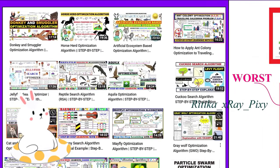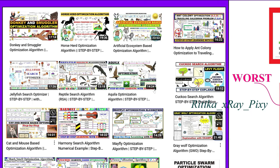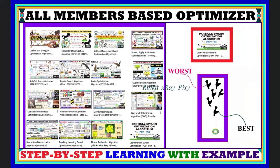We have already discussed different metaheuristics inspired by animals, insects, birds, nature, plants, music, physics laws, human behavior, and others. For example, we have the Particle Swarm Optimization algorithm, which is a swarm intelligence metaheuristic optimization algorithm inspired by the bird's flocking behavior.